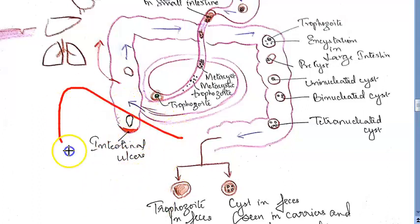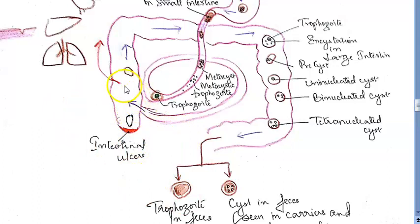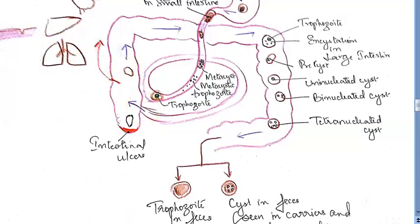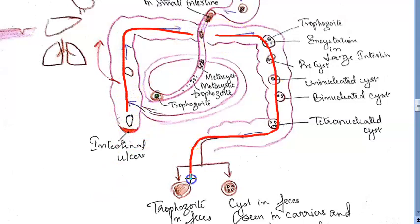At the ileocecal junction, the trophozoite causes intestinal ulcers in the large intestine. From there, it can also enter the bloodstream and reach organs like the liver, lung, brain, and skin, causing extra-intestinal amoebiasis. Continuing with intestinal amoebiasis — from where the trophozoite is, it reaches the feces.